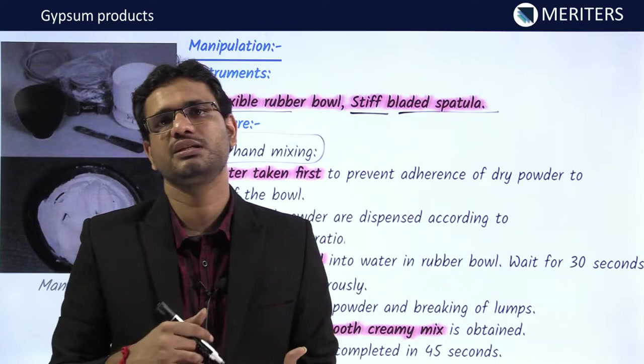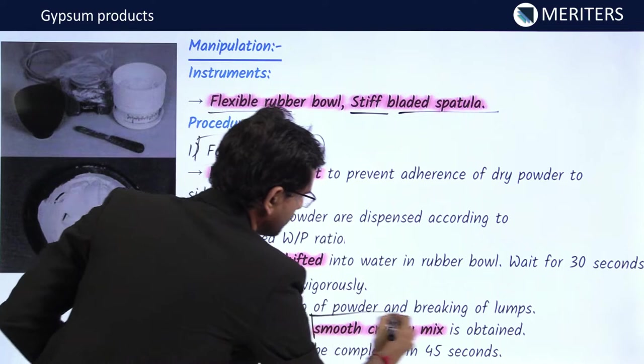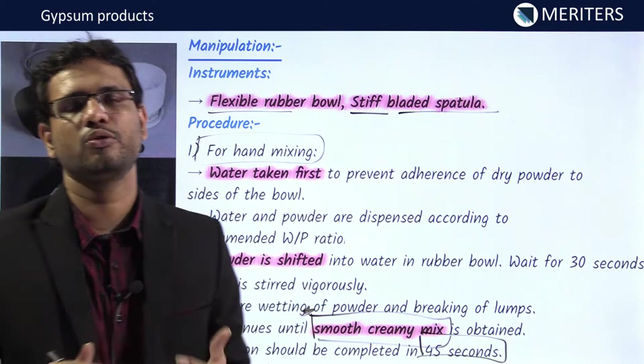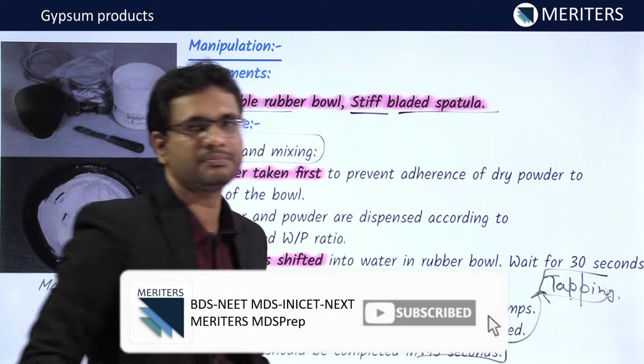Mix vigorously, ensuring no lumps form, until a smooth creamy mix is obtained. Spatulation should be complete within 45 seconds. To avoid air entrapment, tap the bowl after mixing. Mechanical mixing apparatus is also available for gypsum products.